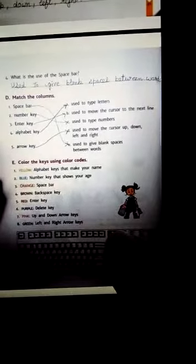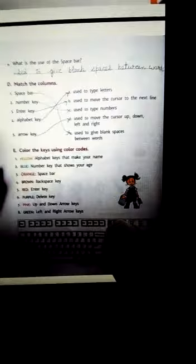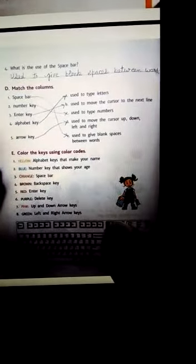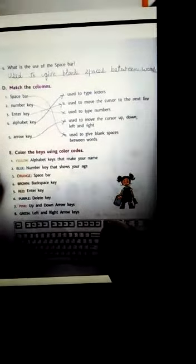Next is match the columns. You have to do matching. Space bar - used to give the blank space between words. Space bar key is used between two words to give space. Number key - used to type numbers. Number key is used to type numbers.